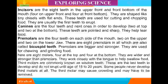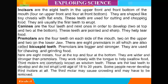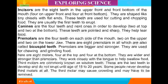There are eight molars — four at the top and four at the bottom. They are wider and stronger than premolars and work closely with the tongue to help swallow food. Third molars are commonly known as wisdom teeth. These are the last teeth to develop and do not erupt until the age of 18 to 20 years. Some people never develop third molars at all. The third molars may cause crowding and may have to be removed.